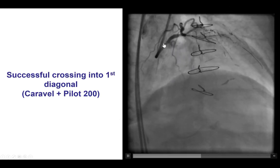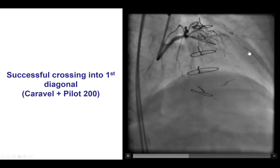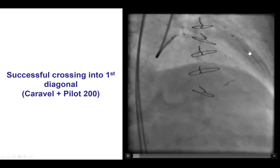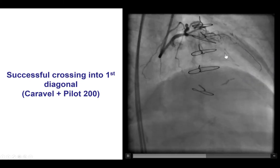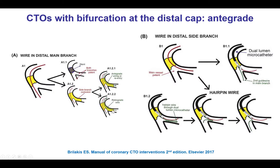We were finally able to advance a Pilot 200 guide wire into the diagonal branch. There is now some antegrade flow going into both the diagonal as well as the LAD. The question is how do we achieve wiring into the LAD, given that the antegrade wire went into the side branch. One option is to get a dual-lumen microcatheter and use the over-the-wire lumen to advance a second wire into the main branch.